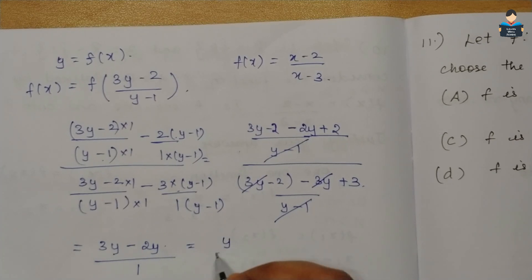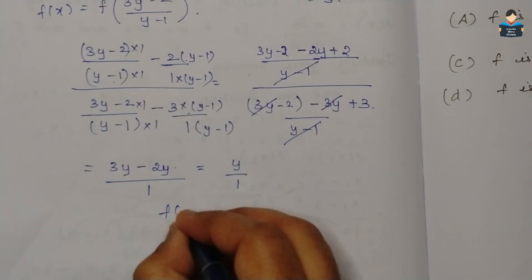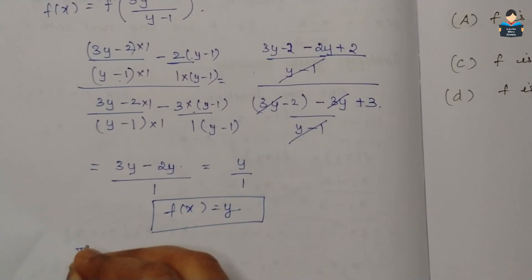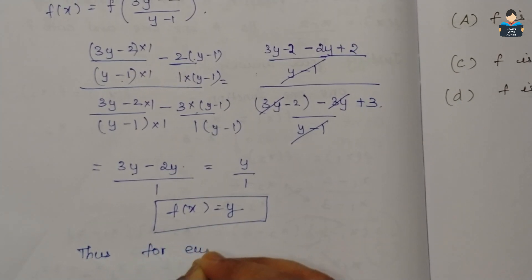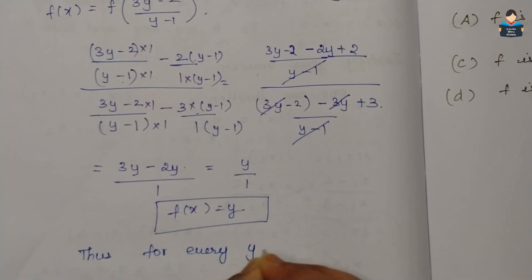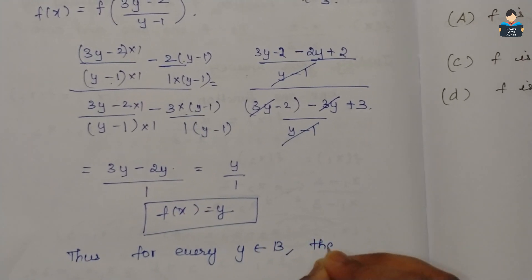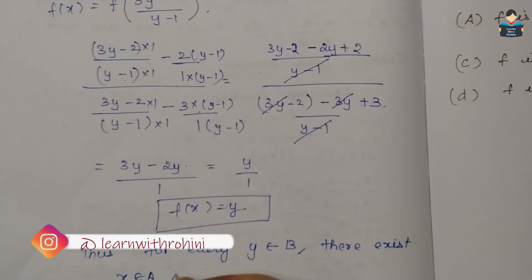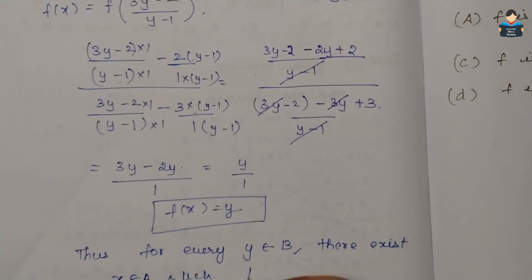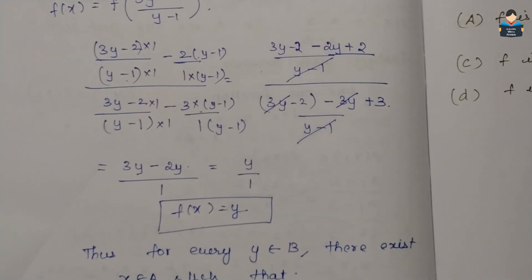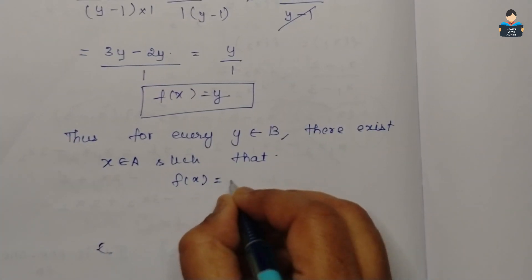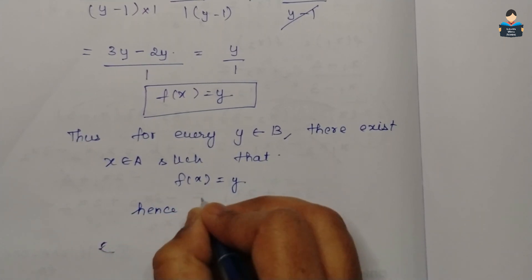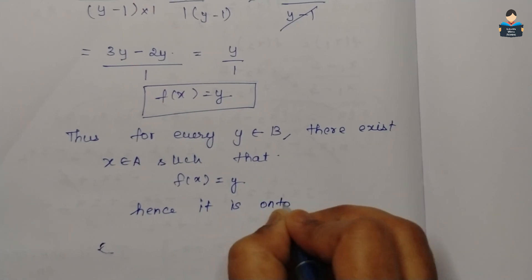So f(x) = y is verified. Therefore, for every y belonging to B, there exists x belonging to A such that f(x) = y. Hence f is an onto function.